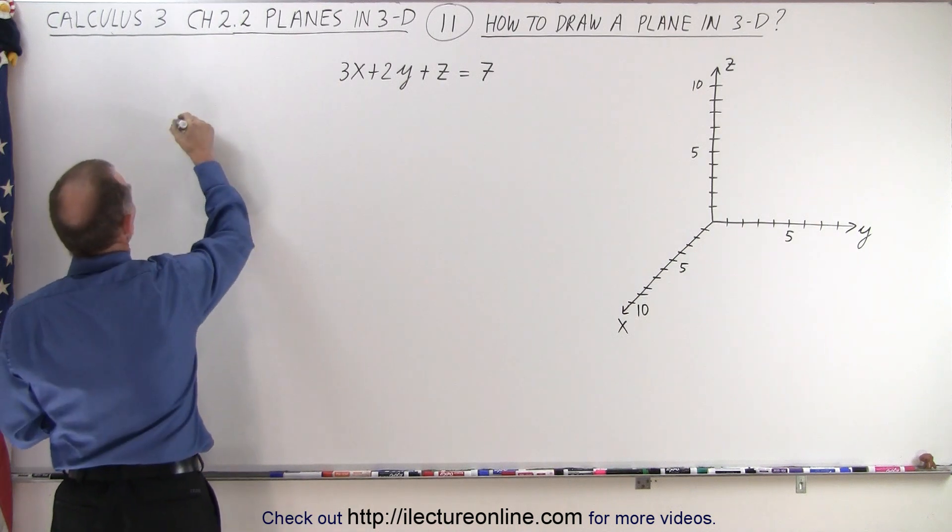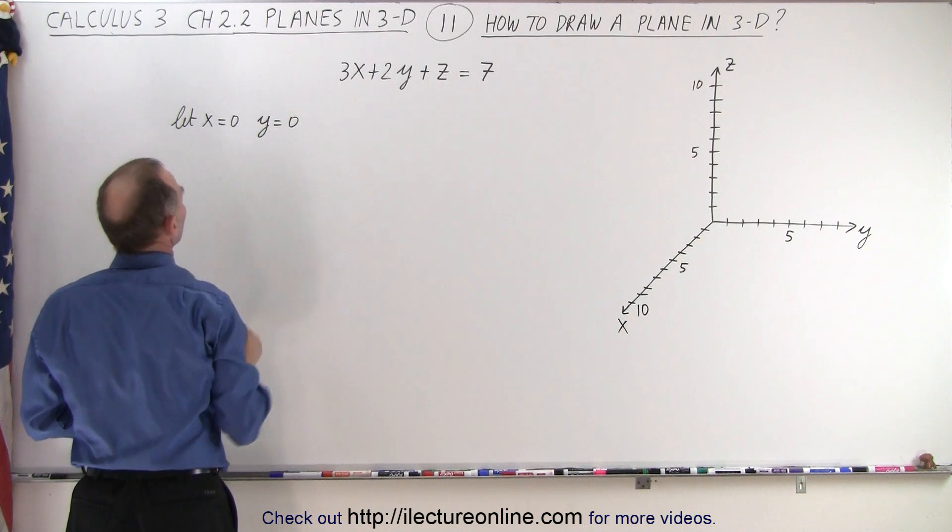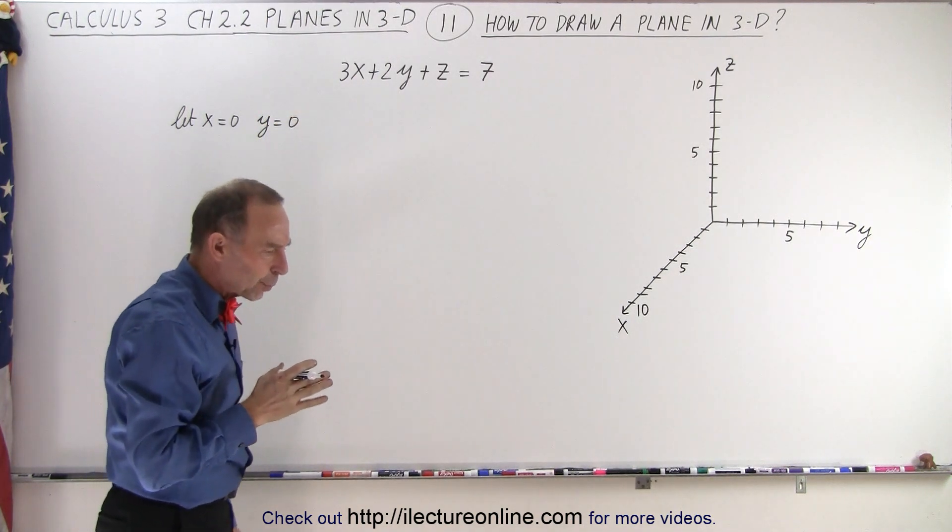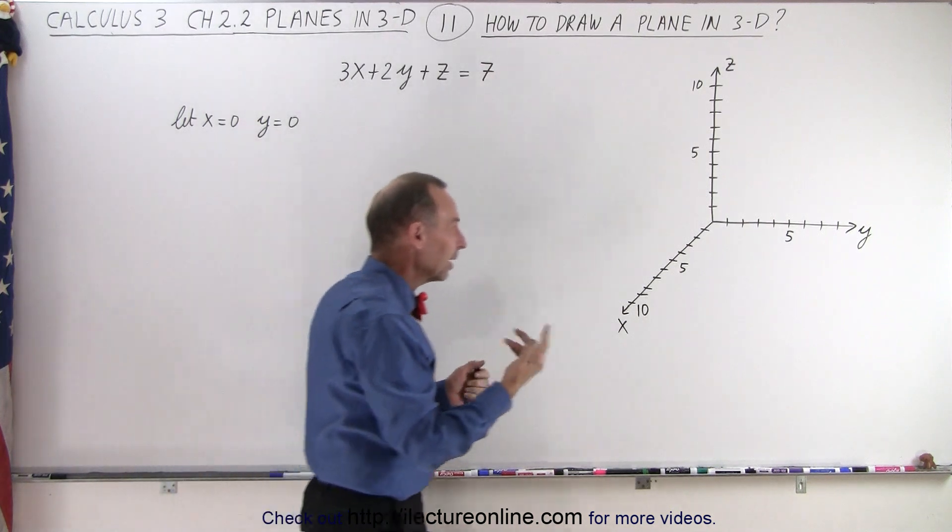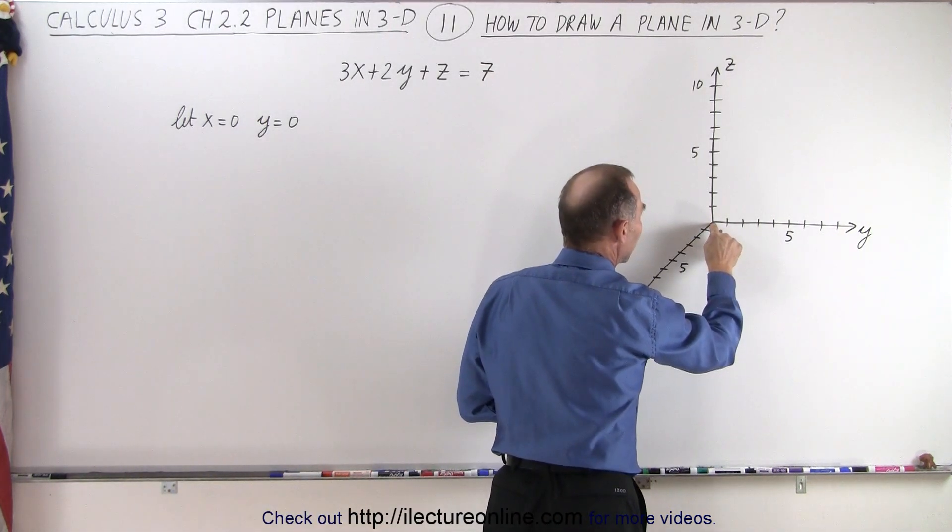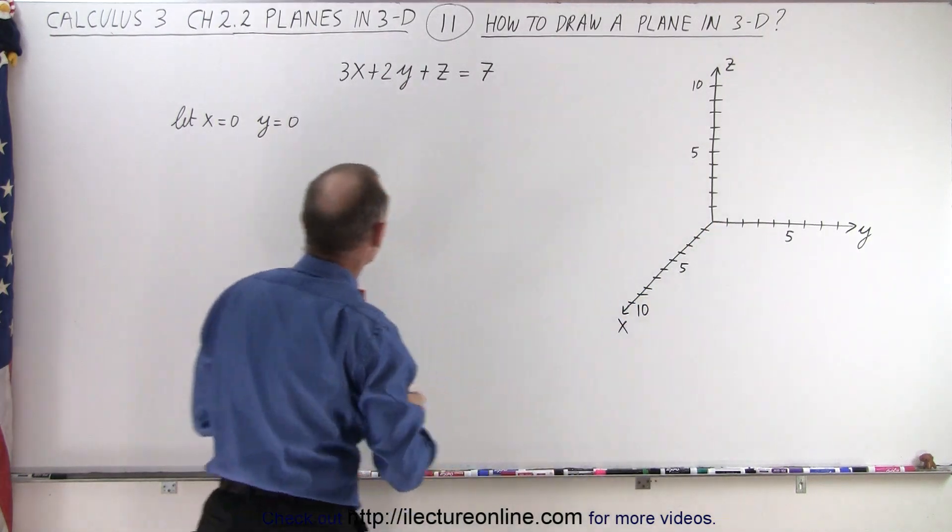So first, what you're going to do is let x equals zero and y equals zero. What is that? Well, that's a plane when x equals zero and y equals zero. Well, not a plane. That's where they meet at the origin, and then we want to find the equivalent z value at that particular case where x is equal to zero and y is equal to zero.